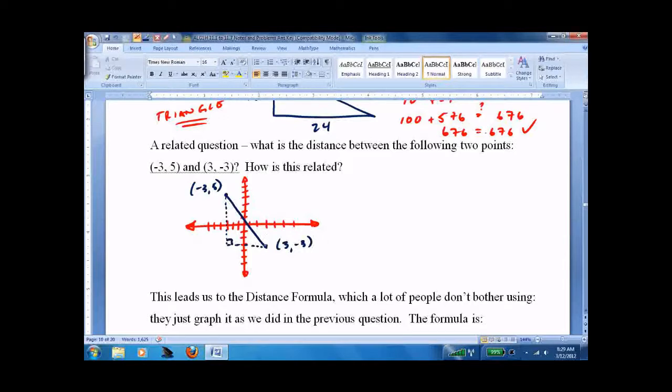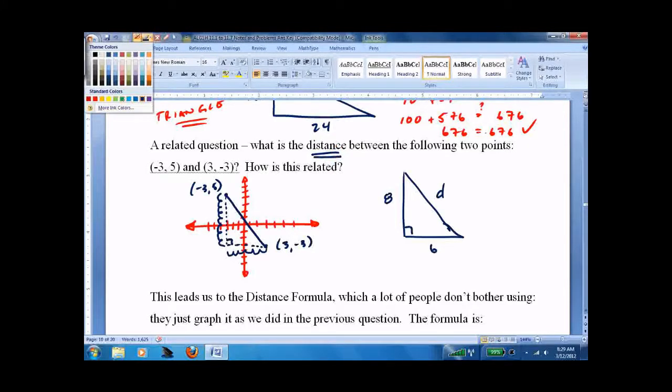And if we had some graph paper, we'd just count. In this case, it's going to be a little tricky. I think we got 1, 2, 3, 4, 5, 6. So, we got a triangle here. 6. And then on this side, 1, 2, 3, 4, 5, 6, 7, 8. That's 8. We'll call this d for distance now, because we're asking for the distance. And then we just blast it out.